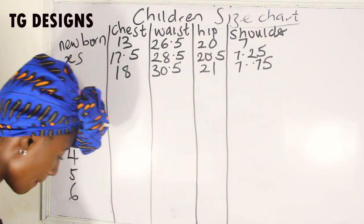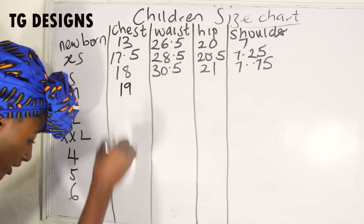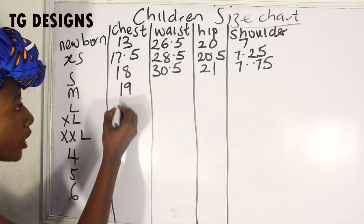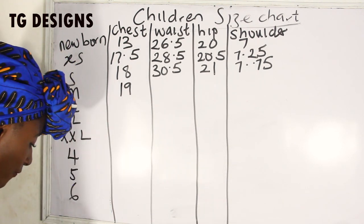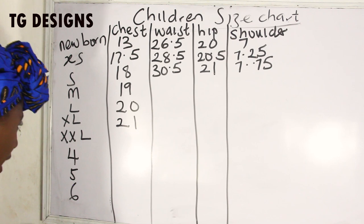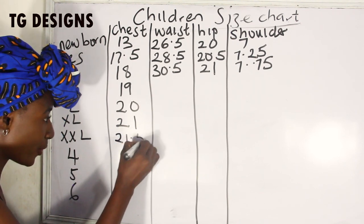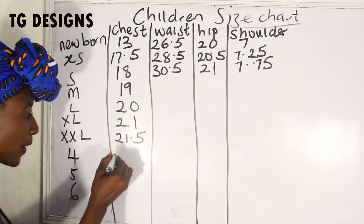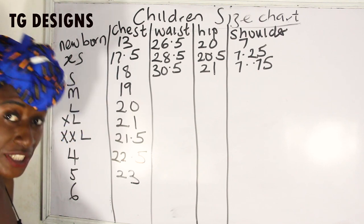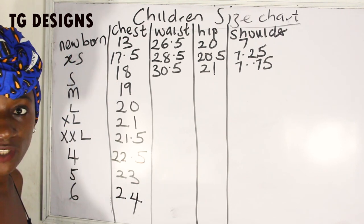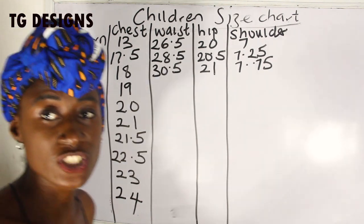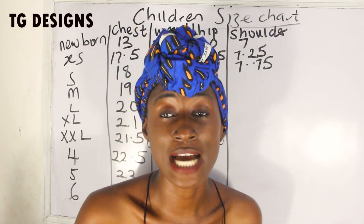The next one is M, which is medium. The chest measurement for medium is 19 inches. We are basically adding one inch for each size: large is 20, extra large is 21, extra extra large is 21.5, size four is 22.5, size five is 23 inches, and size six is 24 inches. So for chest measurements we are just adding one inch to every size.